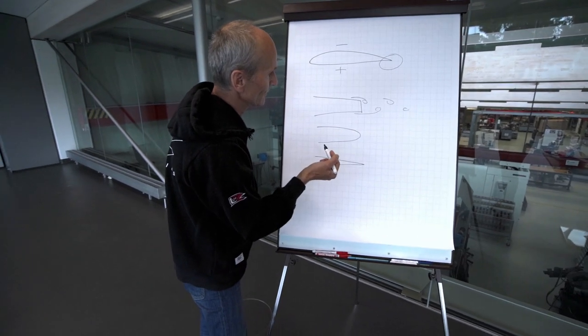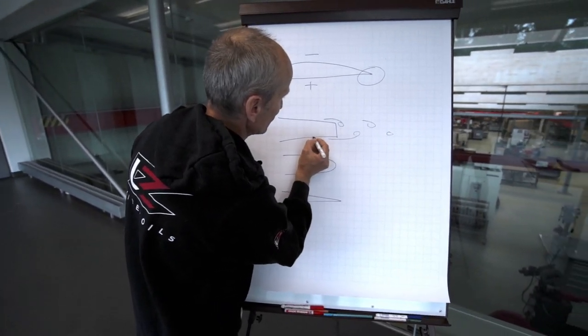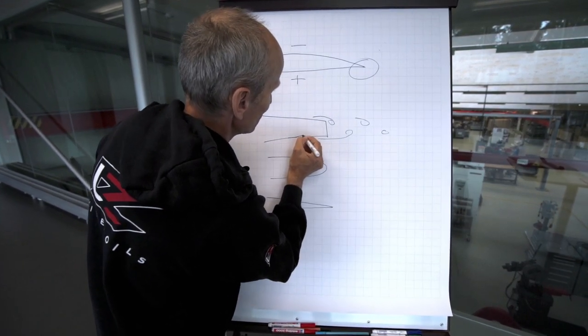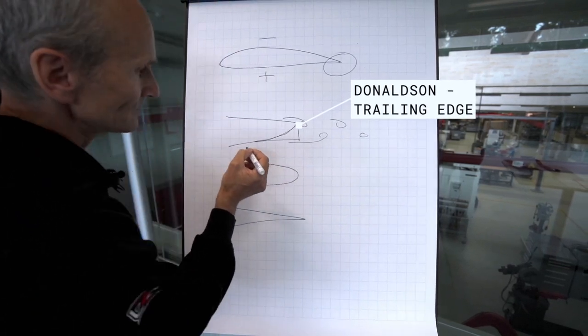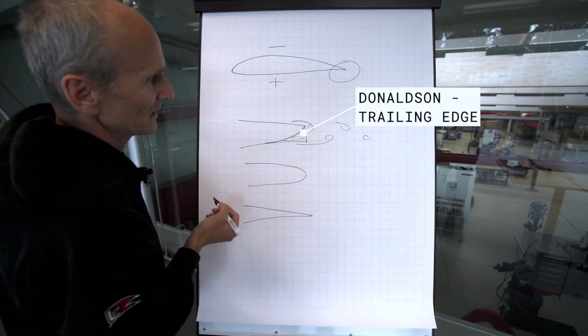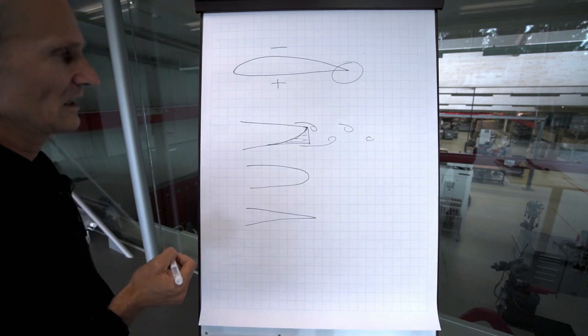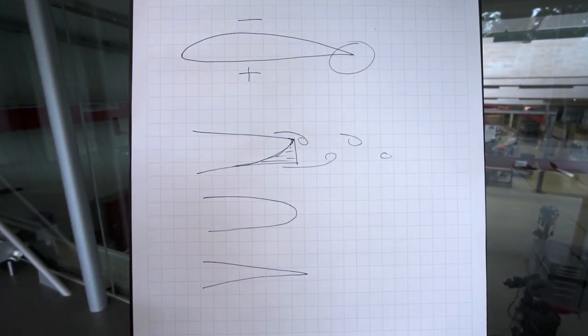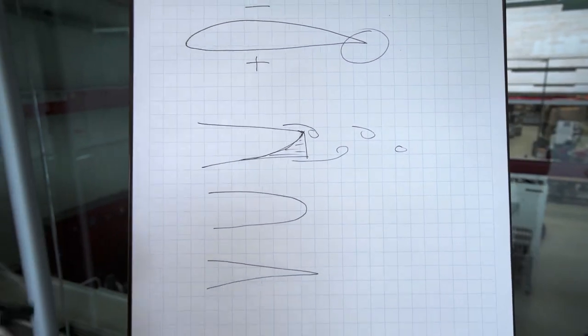So what we want to have is a so-called Donaldson trailing edge. It looks like this. So on the pressure side we take away some material and in the end it should look like this. It doesn't have to be very sharp but we're going to sand it step by step.